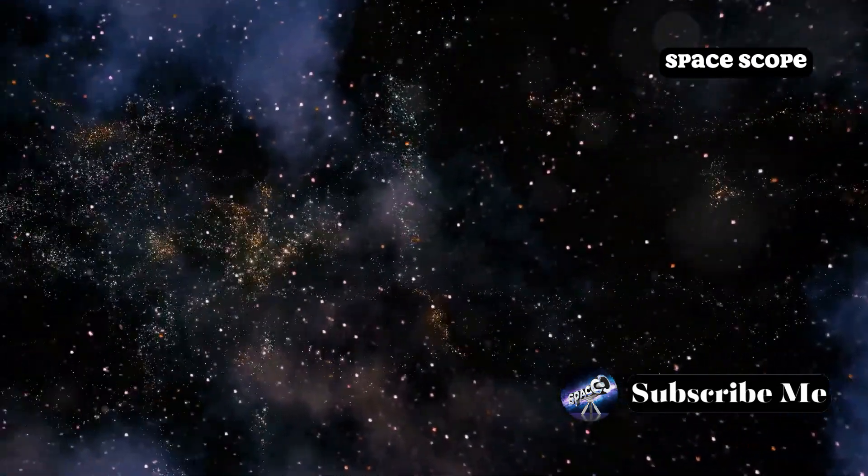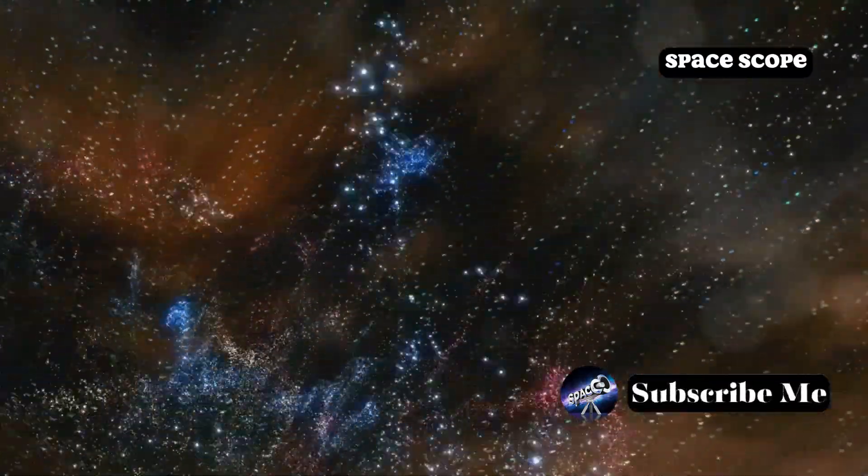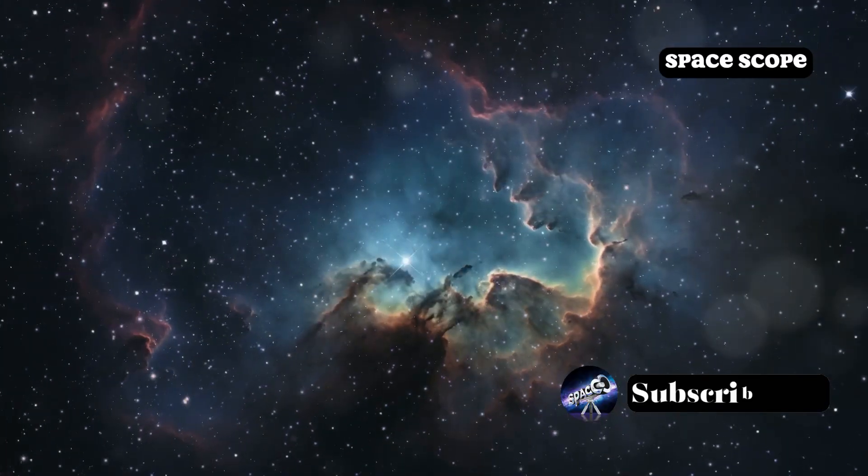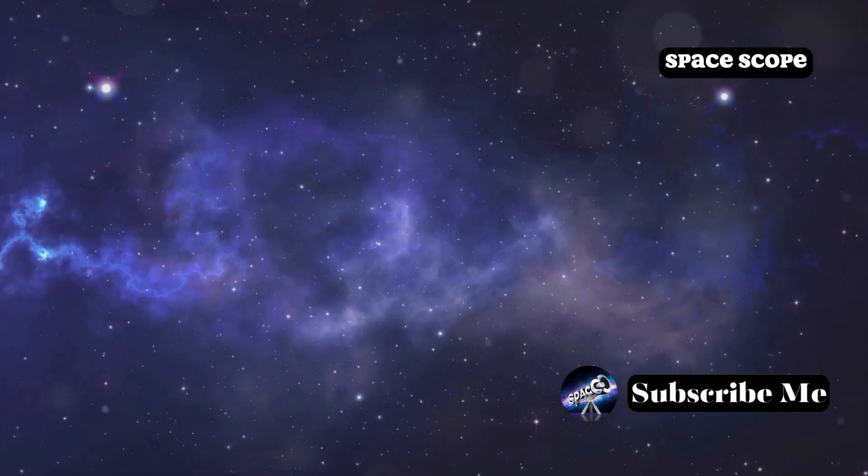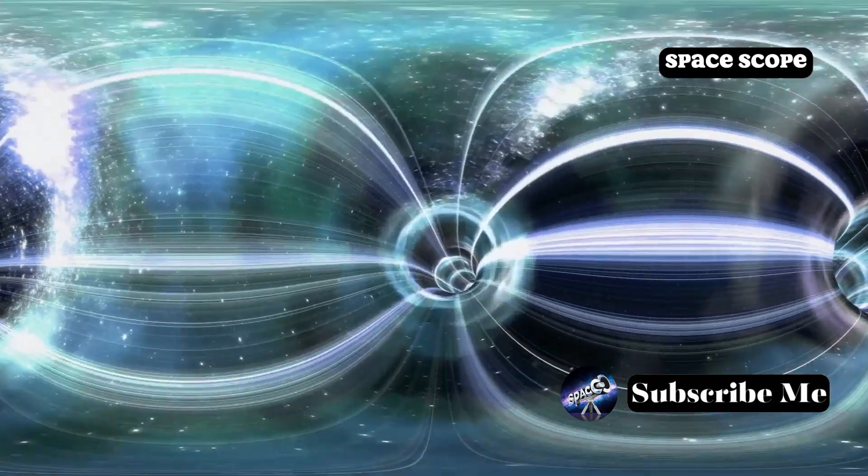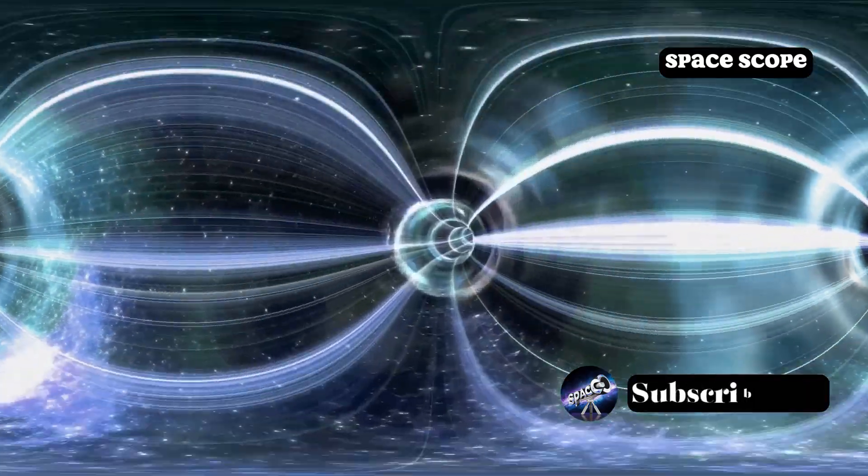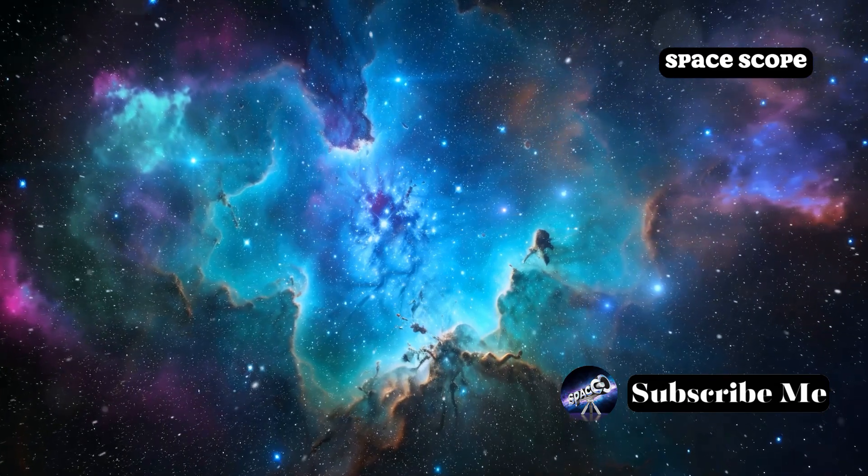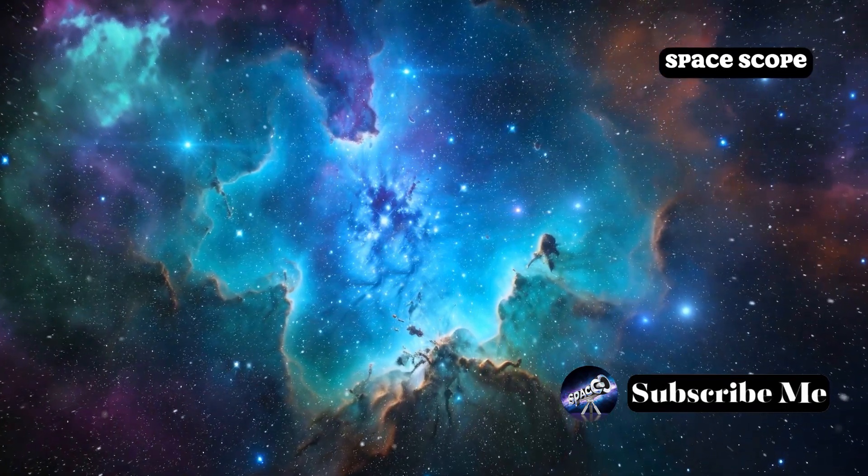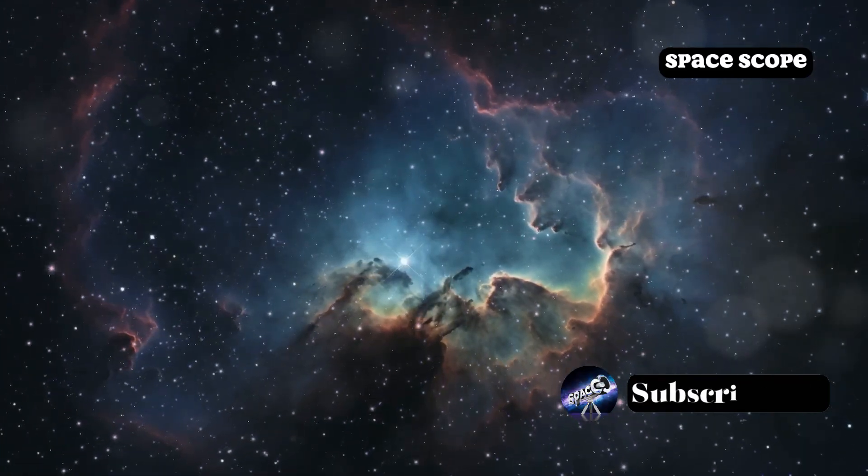Echoes of the Past. Light travels at a finite speed, meaning that when we look at distant objects we are seeing them as they were in the past. Seeing space-time would add another layer to this cosmic time machine. We would not only see the past, but perceive how the universe has evolved over time. The distortions of space-time would reveal the history of cosmic events, like wrinkles on an aging face. We could trace the formation of galaxies, the birth and death of stars, and the dance of matter across billions of years.